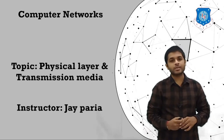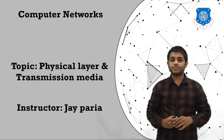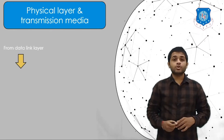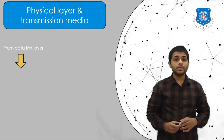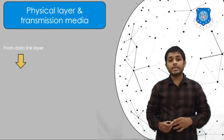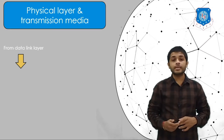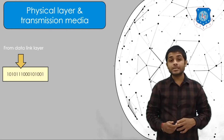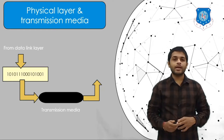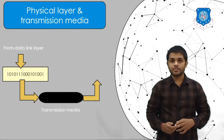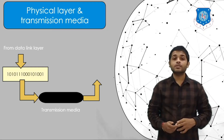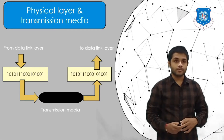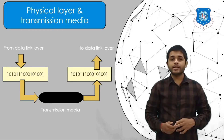The responsibility of the physical layer is that when data is received from the data link layer, the physical layer will convert those bits into a signal and send them using the transmission media. After that, the signal will be converted back into bits and delivered to the data link layer.